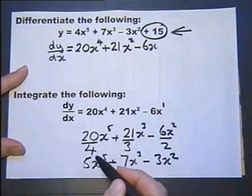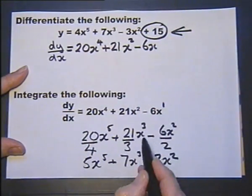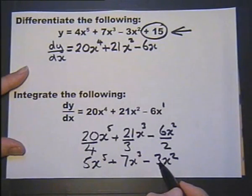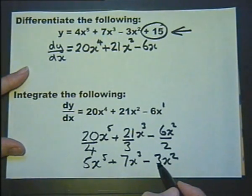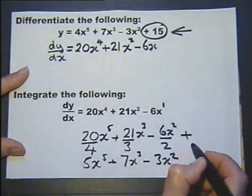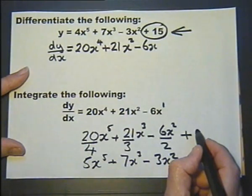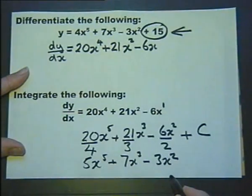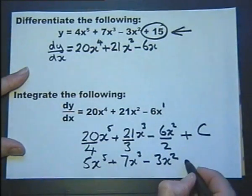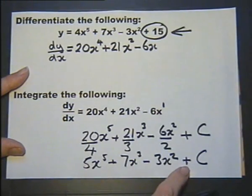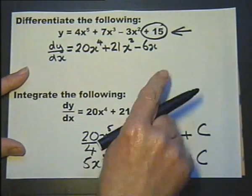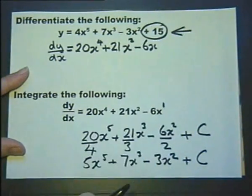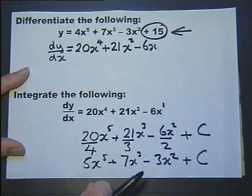Well, almost — we haven't got the number back. When we integrate, we can't recover the constant, not at this stage — we need to be given some extra information. But we do have to show that there's a likelihood of a number at the end, so we put plus C. That's called the constant of integration. When we integrate, we need to include plus C because there's likely to be a number there — it could actually be zero, but we don't know unless we're given additional information.